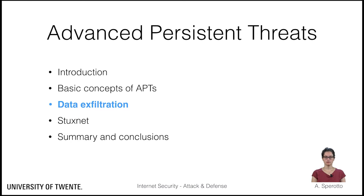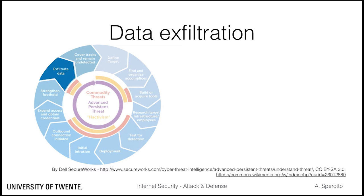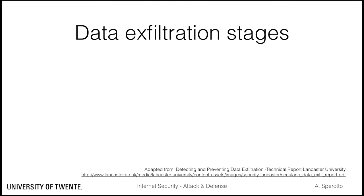In this set of slides, we will talk about data exfiltration in advanced persistent threats. We have mentioned when discussing APT that one of their goals is espionage. Once the APT has gained access and established its foothold in the target network, it will actively gather and extract the information of interest. Such information can include intellectual property, customer information, and state secrets. Data exfiltration in APTs is often a structured approach, given the sensitive nature and the value of the target information.